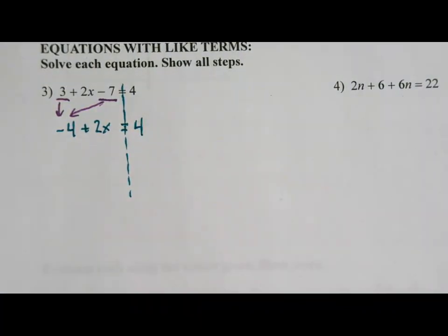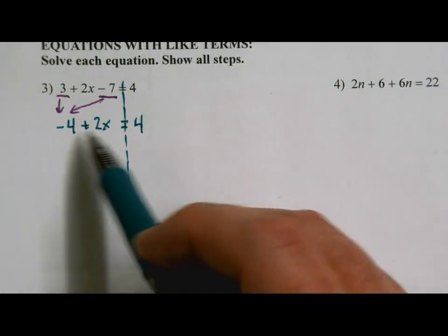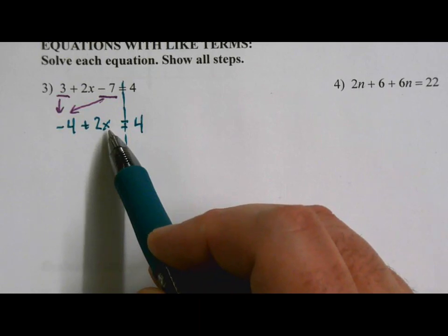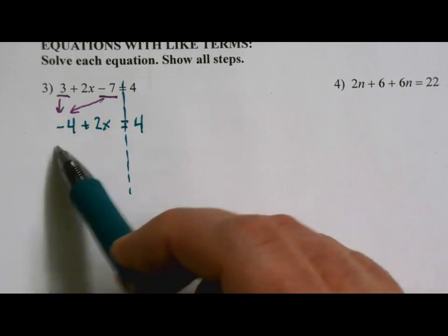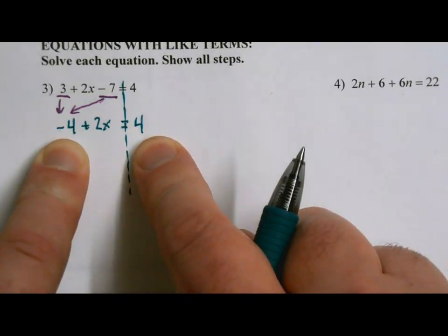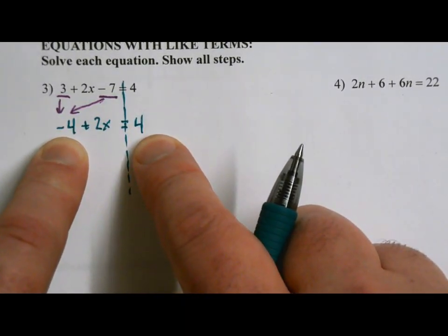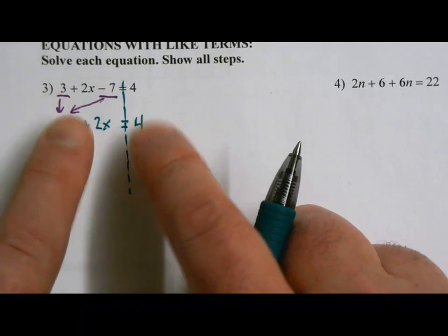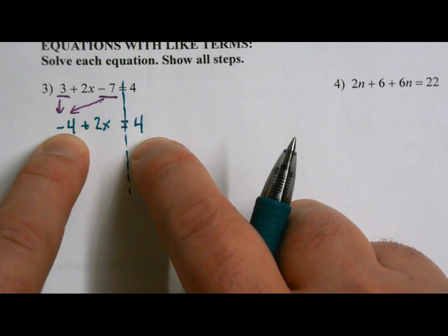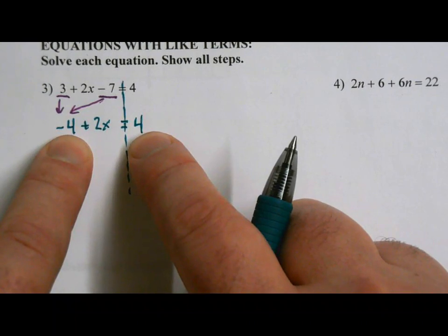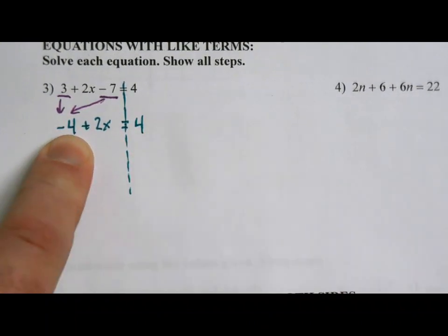Let's make sure we don't have anything else that we can combine. Is negative 4 and 2x like terms? This one does not have an x and this one does, so they are not like terms. We cannot combine those. Now what about the negative 4 and the 4? Are those like terms? The answer is yes, they are like terms, but we cannot combine them because they're on different sides of the equal sign. So you cannot combine across an equal sign. So even though these are like terms, we can't do anything to combine them. So there are no more like terms for us to combine.